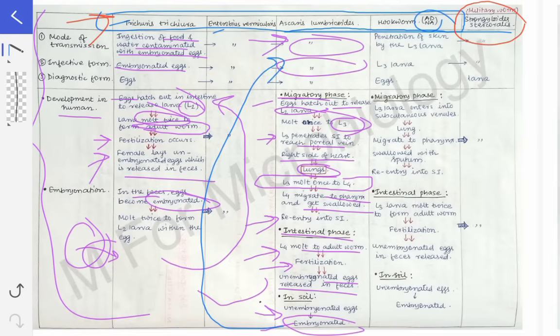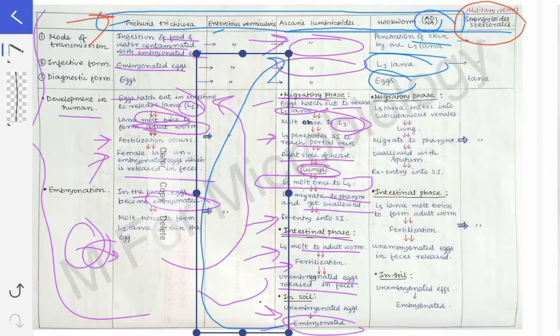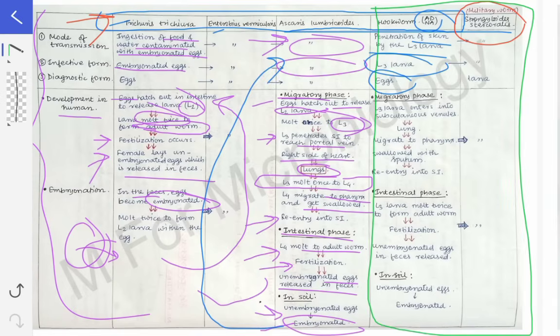Coming to hookworm — the old world hookworm is Ancylostoma duodenale and the new world hookworm is Necator americanus. The mode of transmission for hookworm is completely different: it is penetration of skin by the L3 larval stage. The infective form is also L3. The diagnostic form is eggs. We see that the mode of transmission, infective form, and diagnostic form are matching with Strongyloides — everything is similar for both hookworm and Strongyloides.